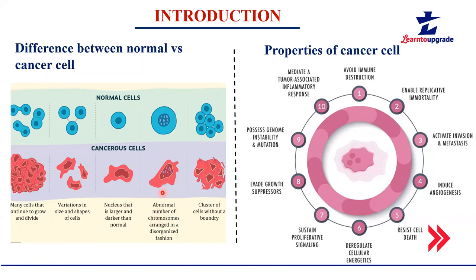Abnormality in chromosome number is studied using a method called karyotyping. As for the properties of a cancerous cell and how it survives in our body despite immune cells: when a foreign antigen enters our body, immune cells activate to eliminate it. But cancerous cells have inbuilt mutations and proteins that distract the immune system, and they replicate their DNA so rapidly that there is enormous cell division occurring.